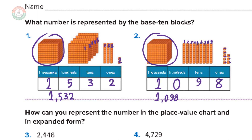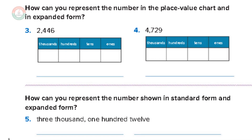Number three: how can you represent the number in the place value chart and in expanded form? Let's first represent the number in the chart. We have four digits — the fourth digit is the thousands place. We have two in the thousands, four in the hundreds, four in the tens, and six in the ones. This number is 2446.